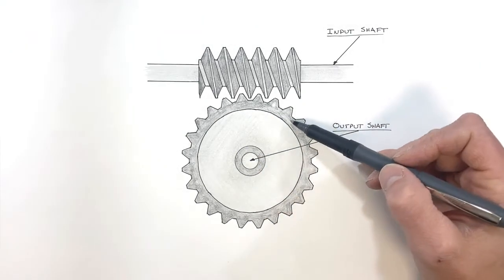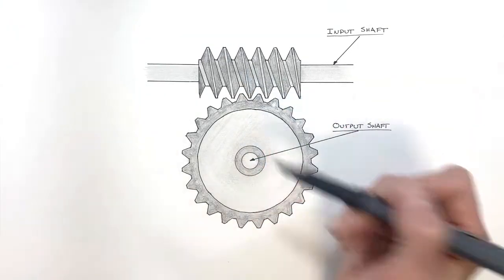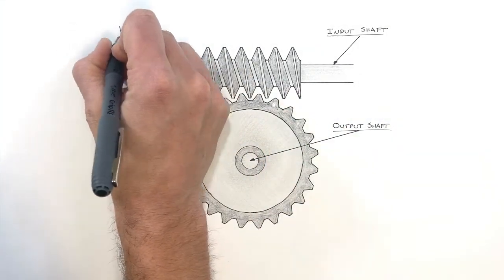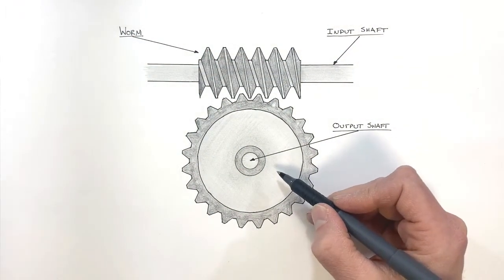Unlike a regular gear train, what we have are two special gears. This gear is called a worm, and this gear is called a worm wheel.